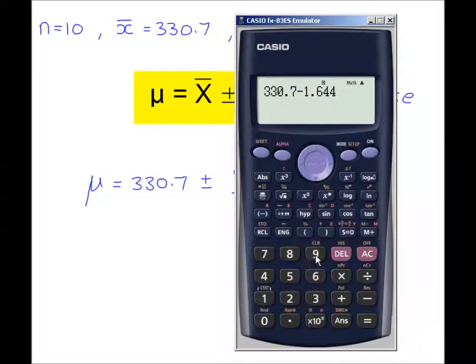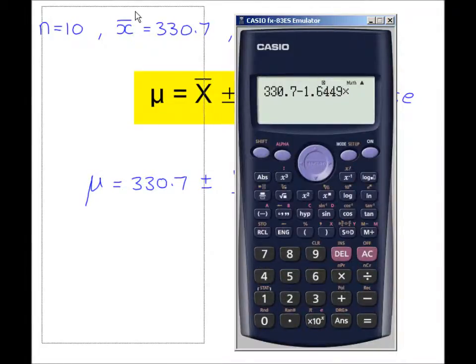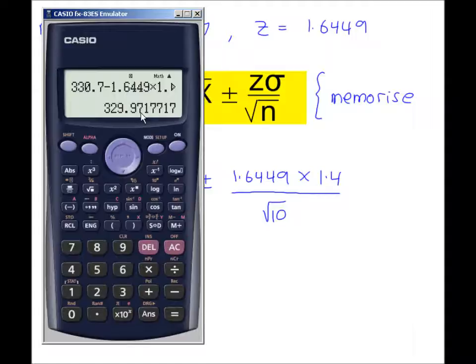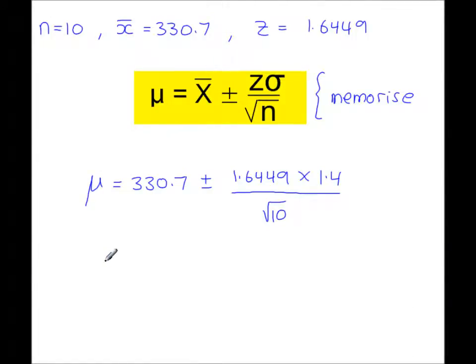Do the calculation with the minus in there first. And then repeat it, but with the plus. So 329.97, if you round that to four significant figures, 330.0 millilitres.